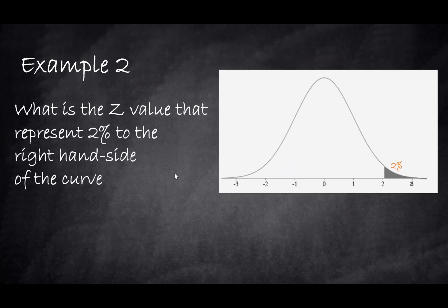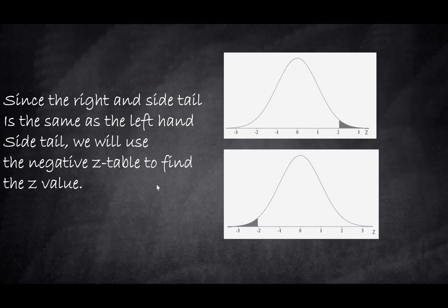Let's see another example. What is the Z value that represents 2% of the right-hand side of the curve? So this area under the curve, the tail is 2%. What will be the Z value that is equivalent to that area? Now the problem with this scenario is that we don't have a Z table to give us the right-hand side tail.